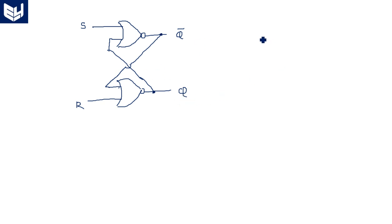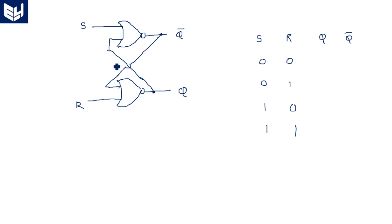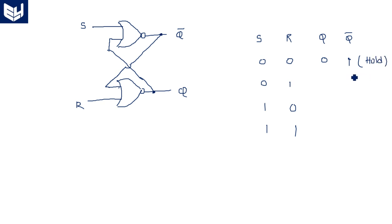This is the NOR-based SR latch. The truth table has inputs S and R, and outputs Q and Q-bar. We provide digital inputs: 0,0 — 0,1 — 1,0 — 1,1. When both inputs are zero, we initially assume Q equals 0 and Q-bar equals 1. Applying those to the NOR gate, the output remains the same previous state: Q equals 0, Q-bar equals 1. This is called the holding state or previous state.